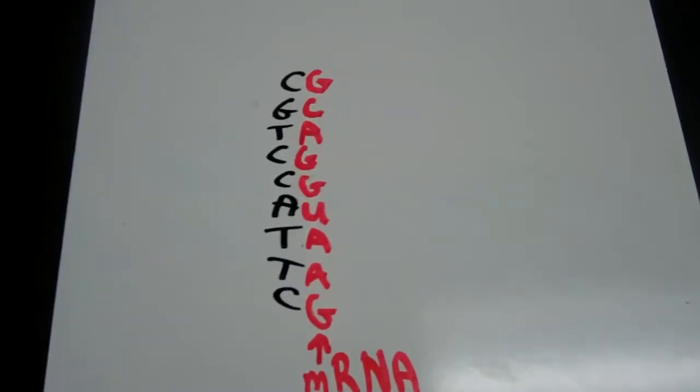And the messenger RNA will now take this code out of the nucleus and it will arrive at the ribosome. So now let's say that messenger RNA has arrived at the ribosome and transfer RNA is going to bond next to the messenger RNA.